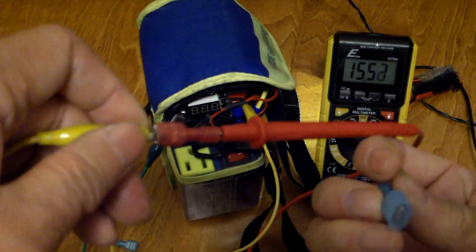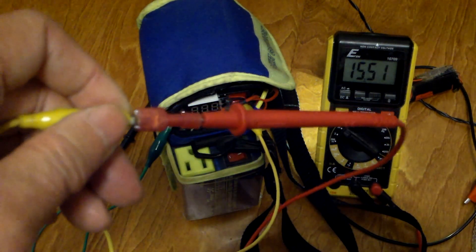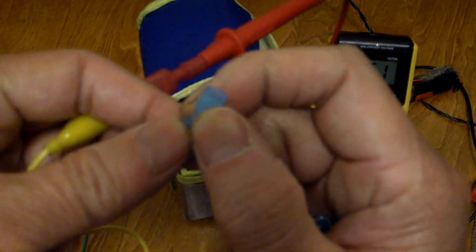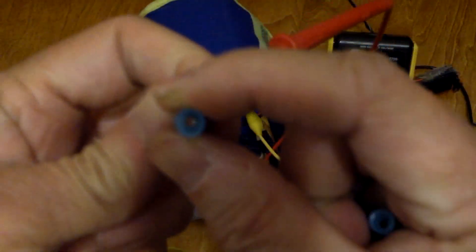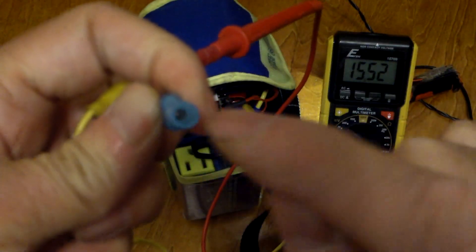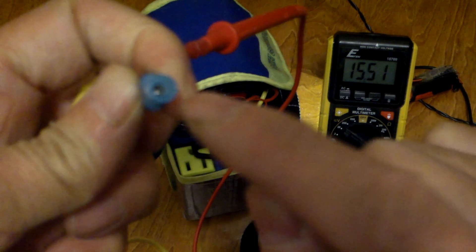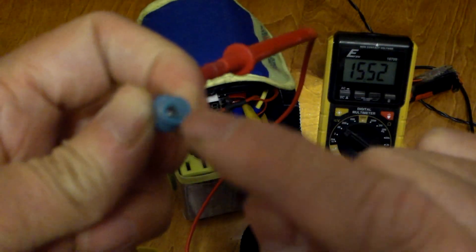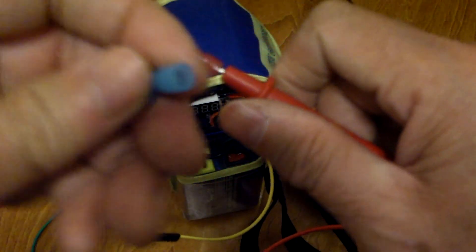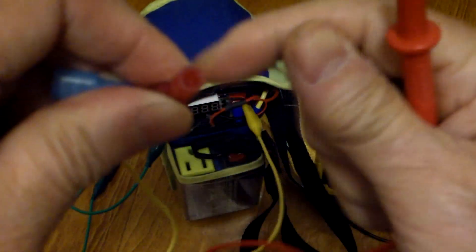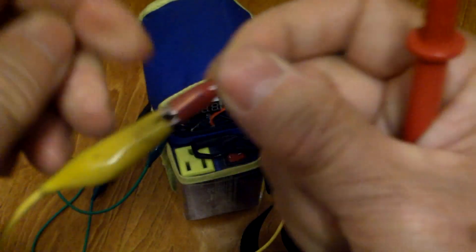My idea is to use a crimp connector like this. I'm not sure what gauge wire it's for, probably 16 to 18 gauge wire. I just stick the probe right inside the crimp connection here.